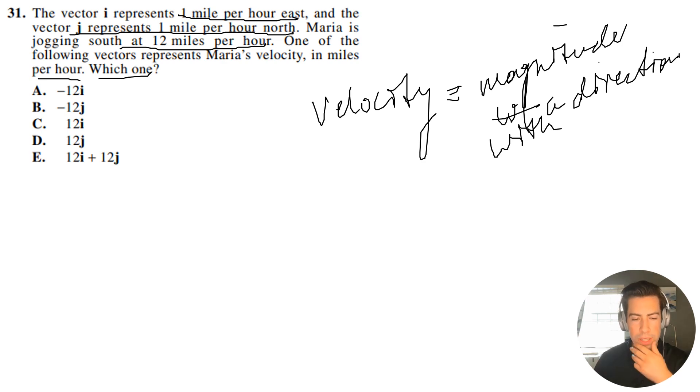So basically what that means is if we look at these vectors, right, if we have a graph here - sorry, that was supposed to be the origin - anyway, vector I would be one mile per hour east, so it could just be something like this, right? One mile per hour east. And then vector J represents one mile per hour north, so it could be like right here. So it would be one mile per hour north.